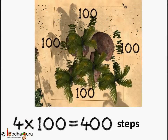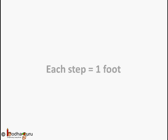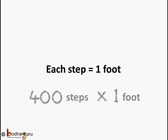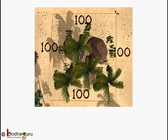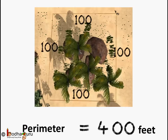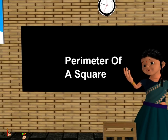Now suppose each step was equal to 1 foot. So 400 steps would be equal to 400 multiplied by 1 foot, which is equal to 400 feet. So the perimeter would be equal to 400 feet. Now you know how to calculate the perimeter of a square. That's all for now. Bye-bye children.